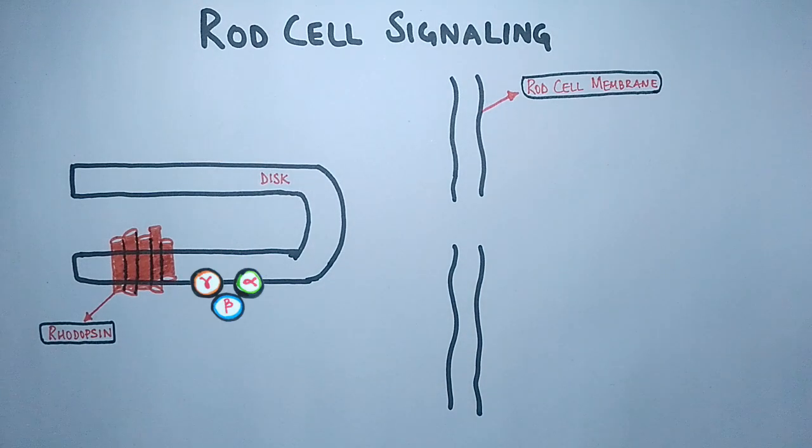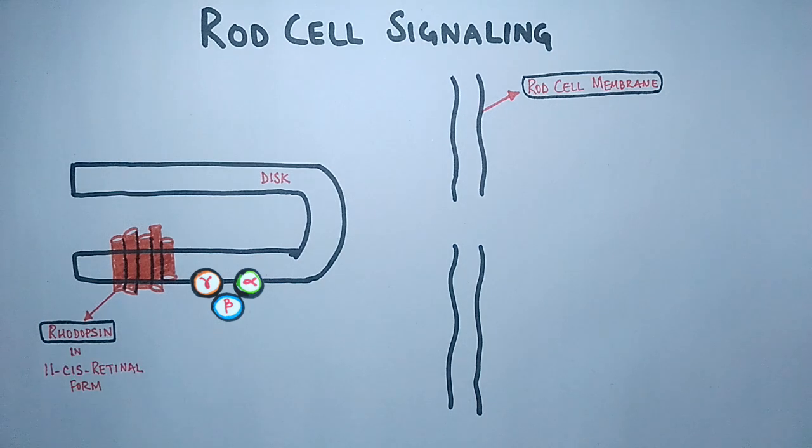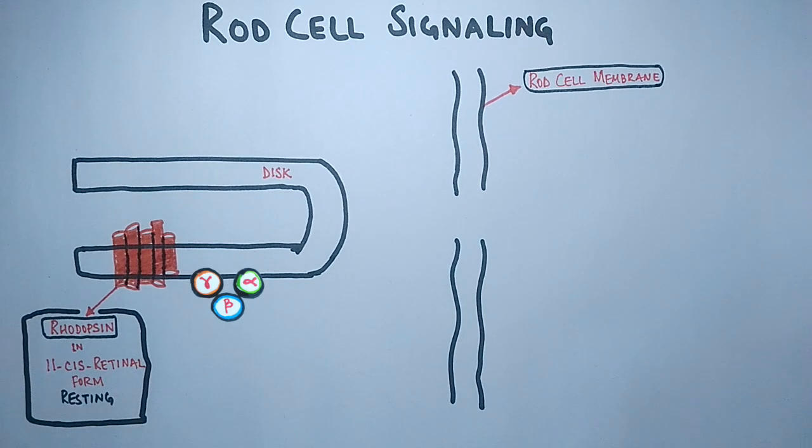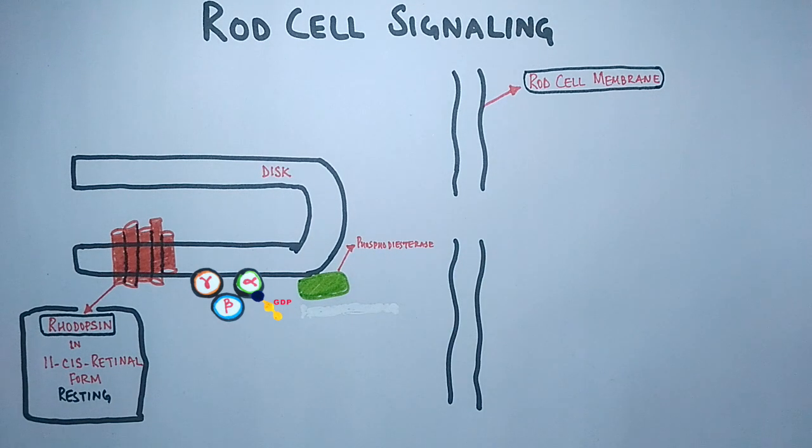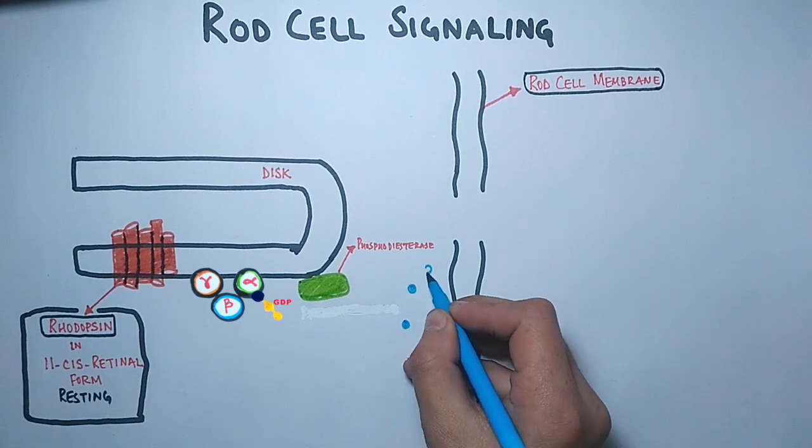After that we have transducin protein having trimeric structure as shown in the figure, in the form of alpha, beta, and gamma subunits. This being a rod cell at rest, that's in dark, at that time there will be GDP bound to alpha subunit of transducin. And there is another protein present in rod cells called phosphodiesterase, which hydrolyzes the cyclic GMP to 5' GMP.